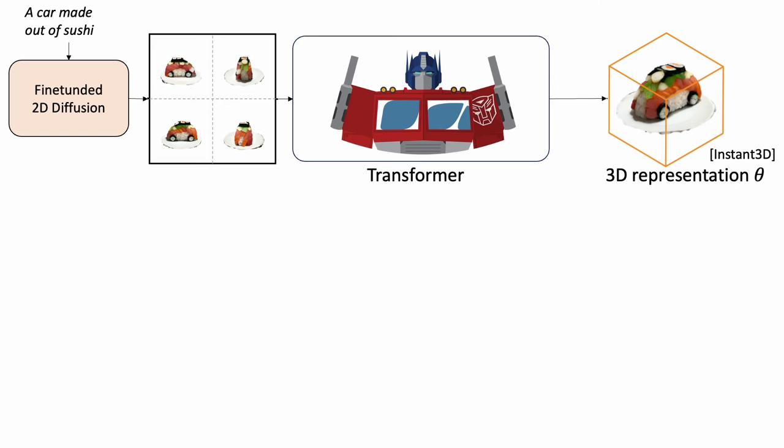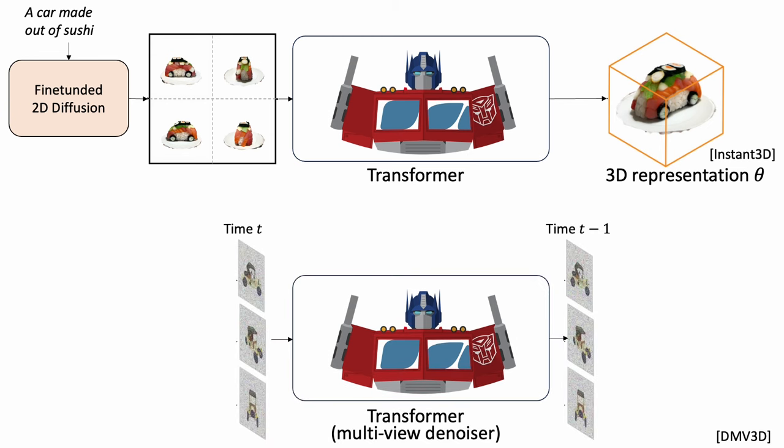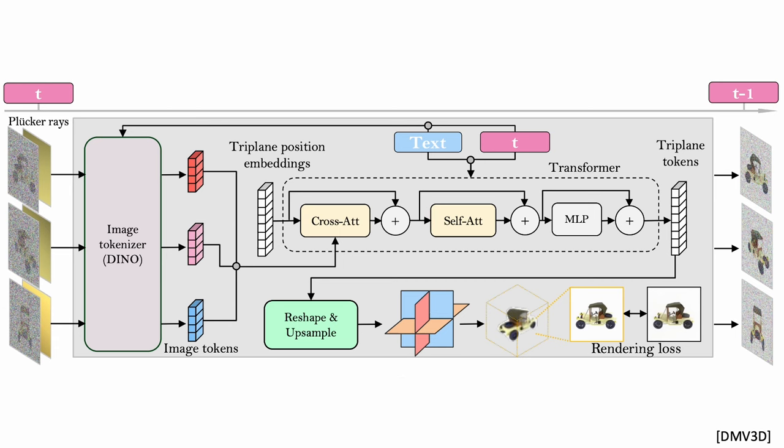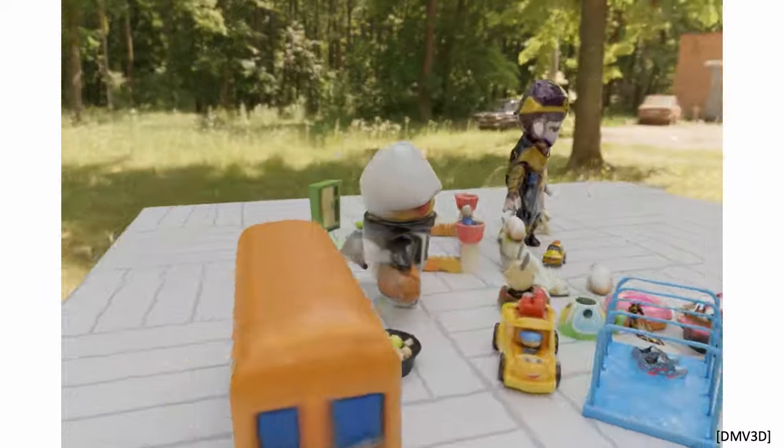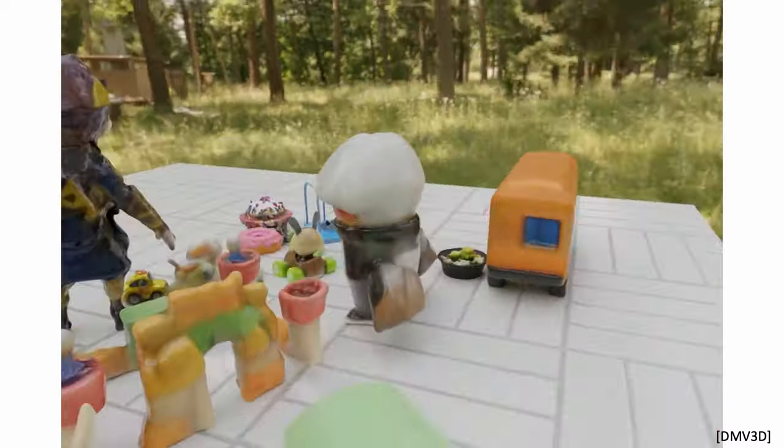This is great, but the use of diffusion model and the transformer architecture feels a bit disconnected. Let's use the transformer itself as a multi-view image denoiser. We take multiple noisy images as input, use the transformer to predict a clean triplane representation, and then add slightly less noise back on the rendered images for the next denoising iterations. Here are some 3D models reconstructed from this method.